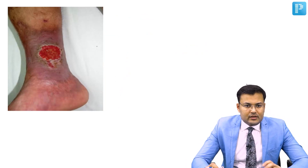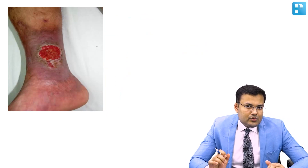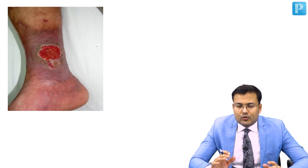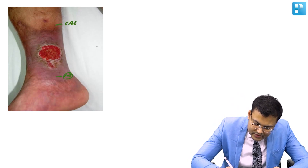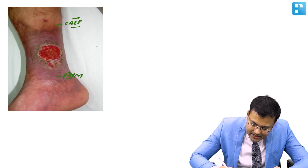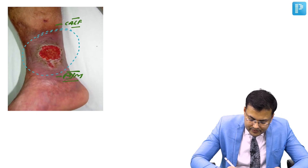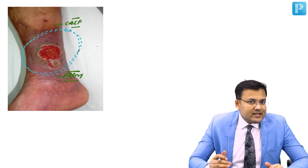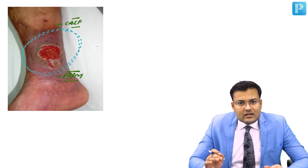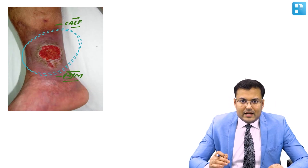This is the appearance of a varicose ulcer. You can see there is pink granulation tissue in the floor. The location of this ulcer is near the medial malleolus. The region between the medial malleolus and the calf is known as the gator's region, and varicose ulcers are usually located in the gator's region — typically just above the medial malleolus.